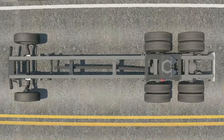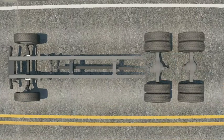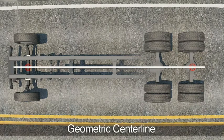To illustrate rear wheel alignment, we'll begin with the geometric centerline. The geometric centerline is an imaginary line drawn through the center point of the rear reference axle and the center point of the front steer axle.